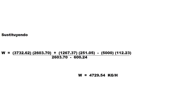W = (C·HC + B·HB − A·HA) / (HW1 − HW2). All enthalpy and flow rate values were obtained in previous steps, so all that remains is to substitute.